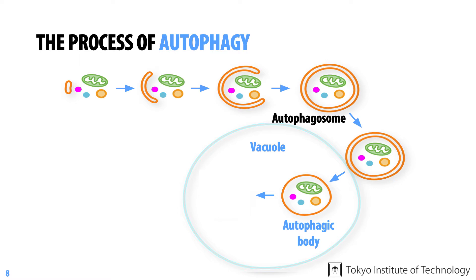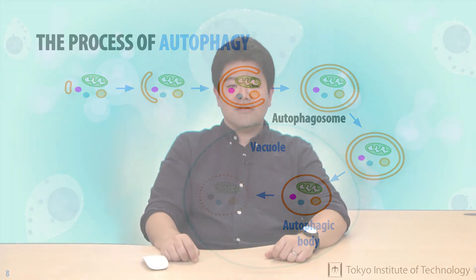After this, the outer membrane of the autophagosome fuses with the membrane of the vacuole or lysosome, resulting in the release of the inner membrane vesicle — now called an autophagic body — into the inside of the vacuole. As degradation enzymes are present within the vacuole, the autophagic body membrane and its contents are immediately degraded.